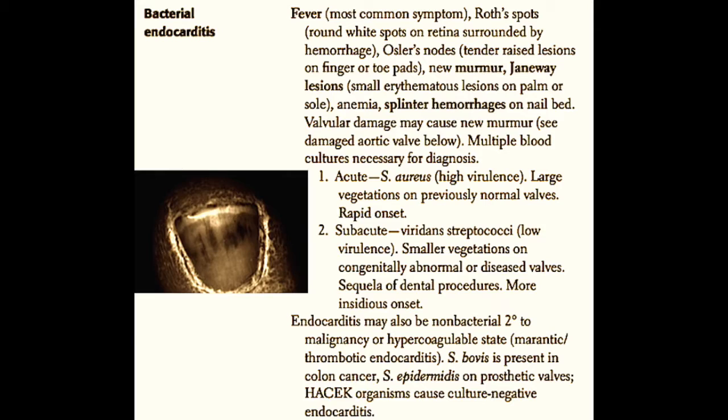In contrast, the other type commonly seen is subacute bacterial endocarditis. It's usually caused by viridans strep, which are low-virulence organisms usually caused by some type of floral contamination of the bloodstream. These cause smaller vegetations on congenitally abnormal or diseased valves. Subacute bacterial endocarditis, or SBE, is often a sequela of a dental procedure and usually has a more insidious onset, with patients complaining of non-specific symptoms.